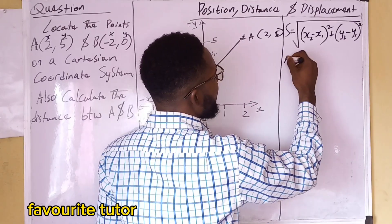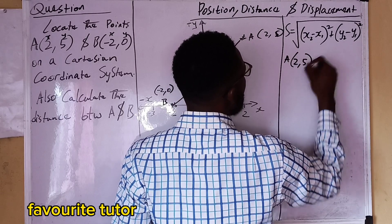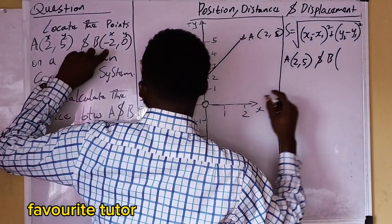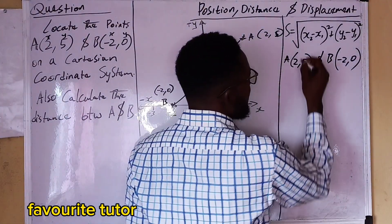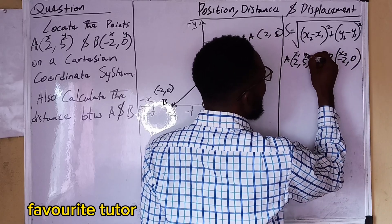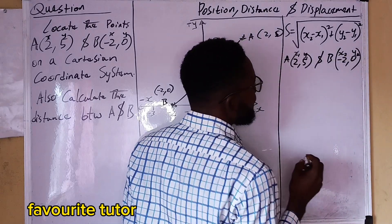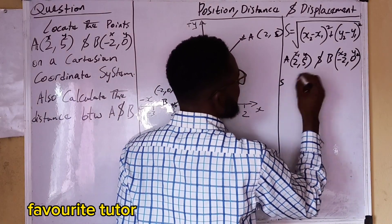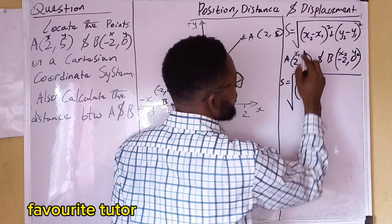So therefore, A is (x1, y1) = (2, 5) and B is (x2, y2) = (-2, 0). We substitute values: distance equals the square root of (-2 minus 2) squared plus (0 minus 5) squared.